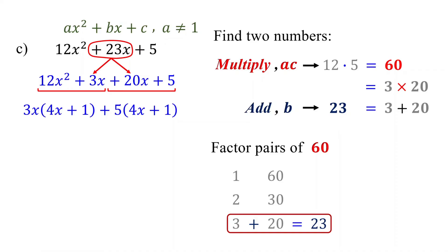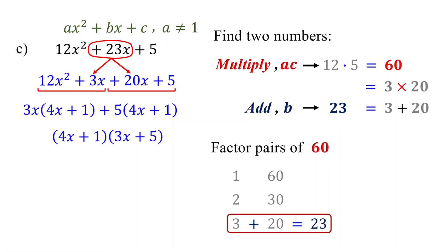When you factor by grouping, if the factors inside the parentheses are the same for both groups, then you are on the right track. Otherwise, you need to go back and check your previous steps. Next, factor out the common factor for both groups, which is (4x plus 1). This leaves behind (3x plus 5) as the other factor. Therefore, this is the answer.